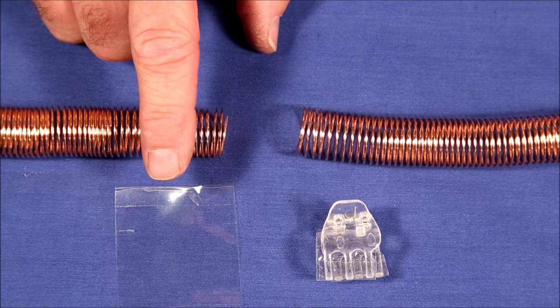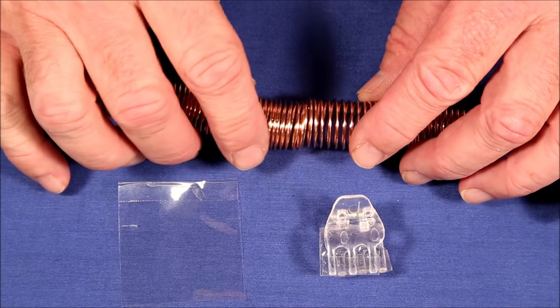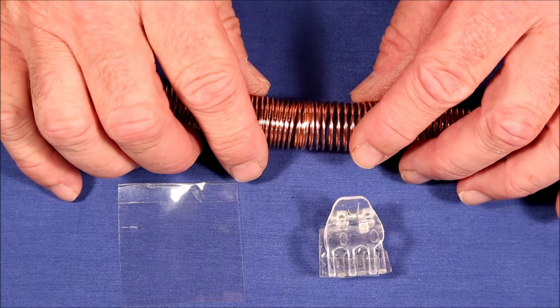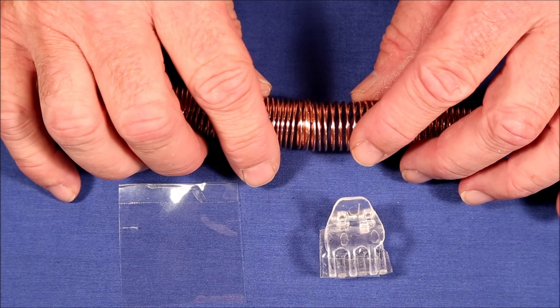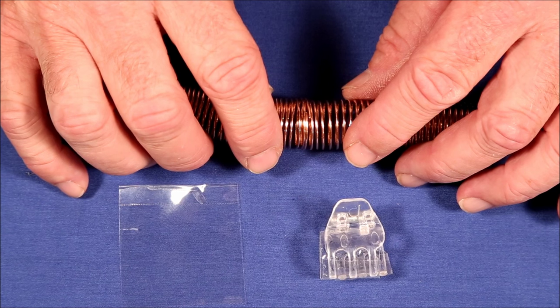Whether you use tape or clips, every union is a danger point in a track because it's very easy for one of the coils to get out of line and block the shuttle from passing.